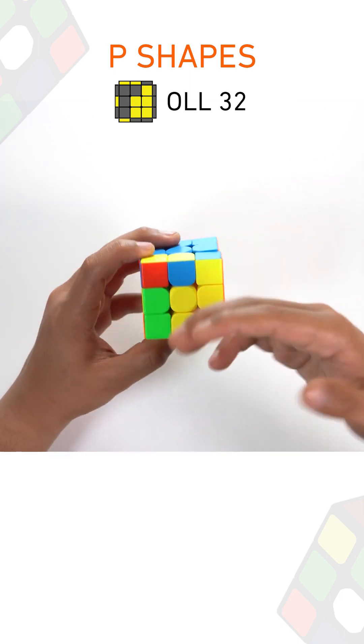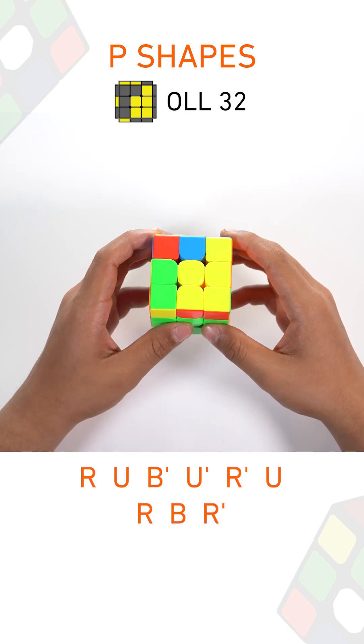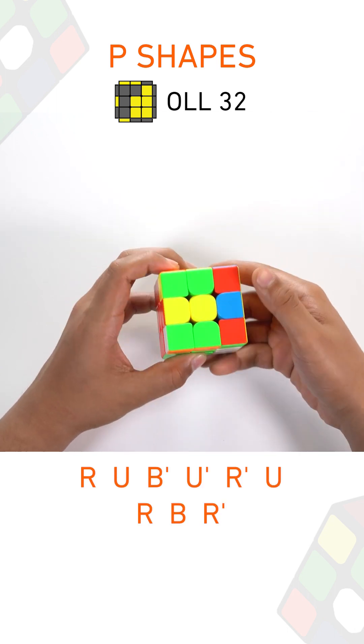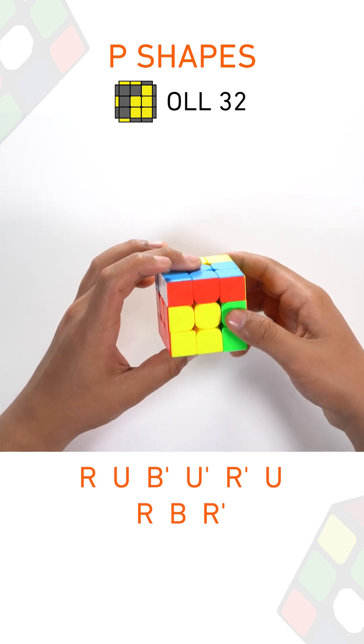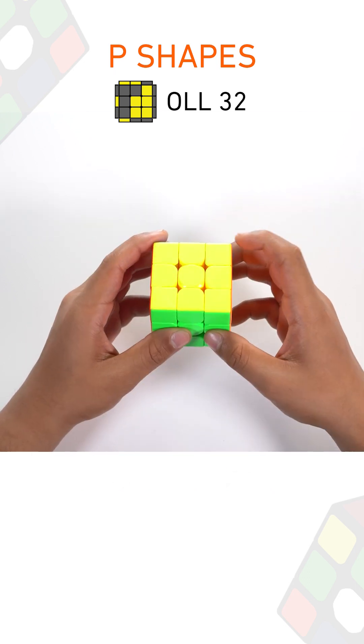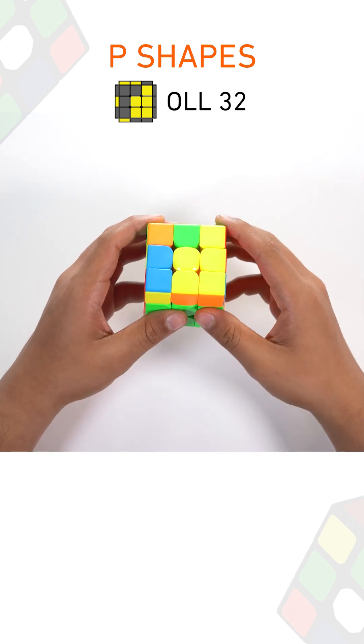The algorithm for this case is R, U, B prime, U prime, R, R prime, U, R, B, R prime. Quickly executed, the algorithm looks like this.